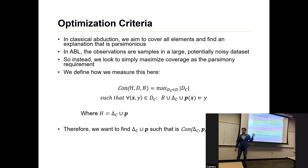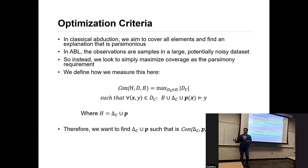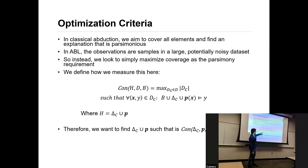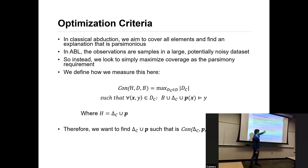This becomes a relaxation of the covering requirement from earlier abduction discussion. Instead of a parsimony requirement, they're looking to maximize coverage. They have this function CON — short for consistency — where H is defined as delta C union with the perceptual model, D which is your dataset, and B which is your knowledge base. They're going to maximize the cardinality of a subset of D such that those samples are covered by the explanation.